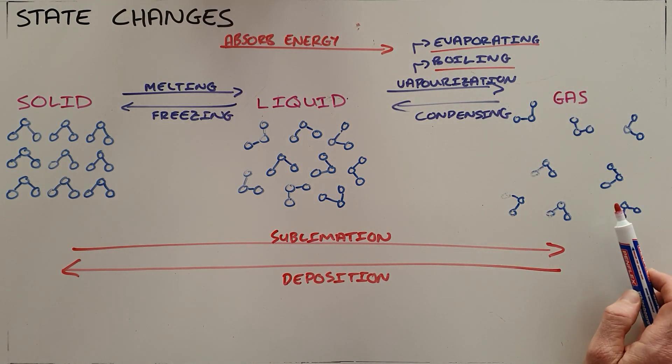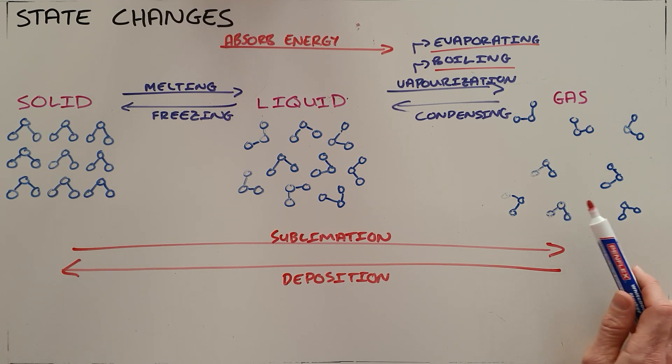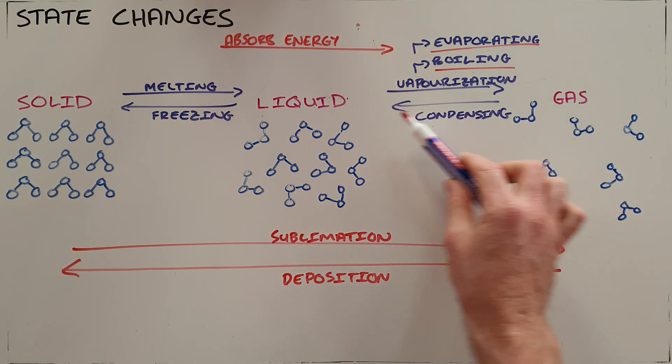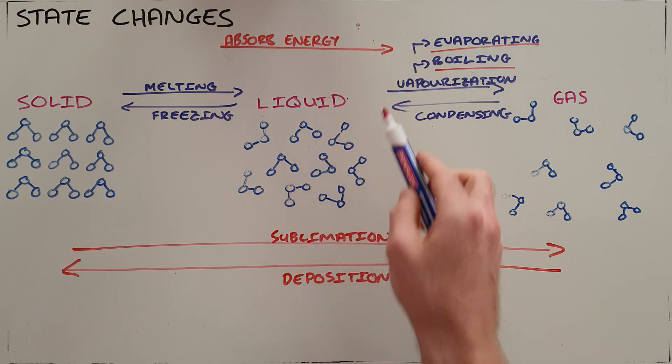We then know that as that gas cools down, it loses energy and condenses. Which is why liquid water forms on the outside of a cold can. It is the water vapor in the air that is condensing onto that surface to form a liquid.